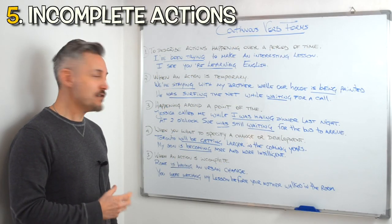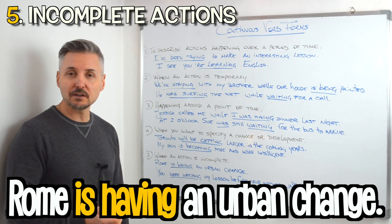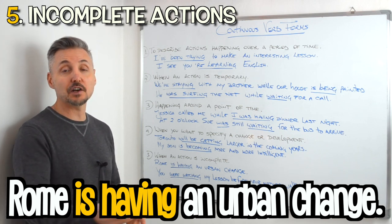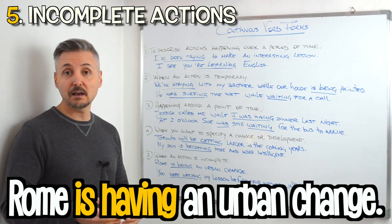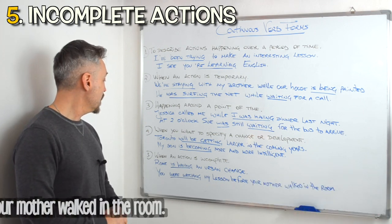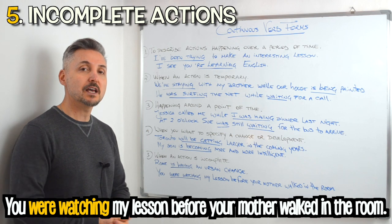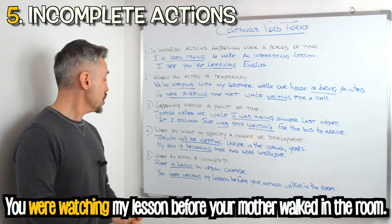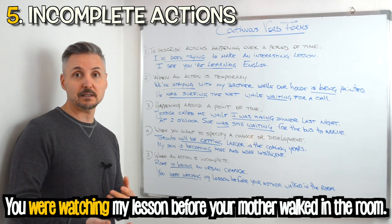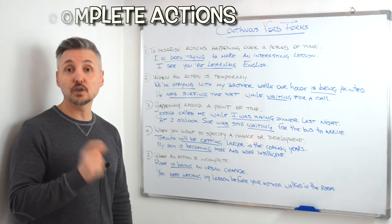For the fifth usage: when an action is incomplete. Like my example — 'Rome is having an urban change.' Something is changing and it's incomplete, but it will change for sure. 'Is having' is the present continuous. Another example: 'You were watching my lesson before your mother walked in the room and you couldn't finish watching the lesson.' That's past continuous. You were watching but couldn't finish — it's incomplete. Now let's look at the sixth usage, stay tuned.